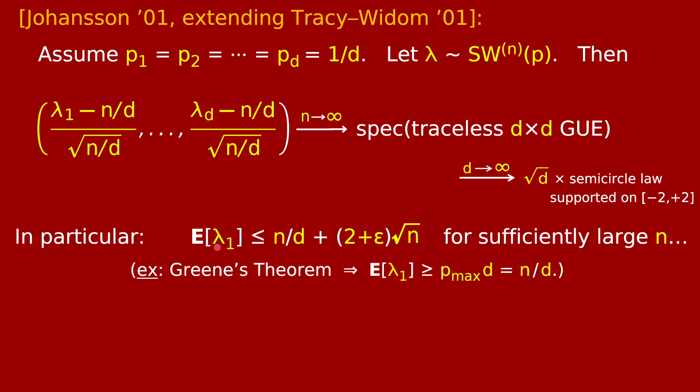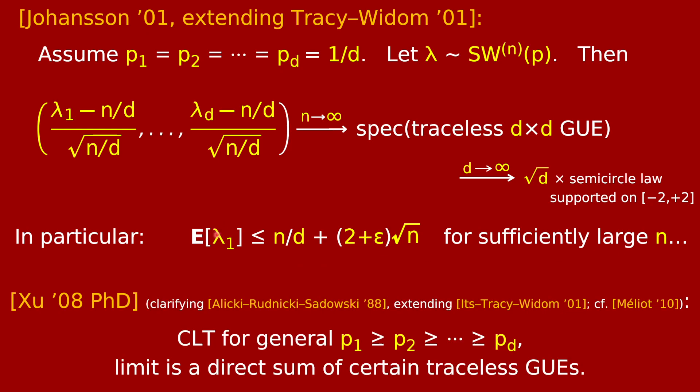Furthermore, this spectrum is pretty well understood itself. In fact, it's known that as d tends to infinity, this vector of d numbers tends to square root d times the semicircle law, the famous semicircle law supported on the interval from minus 2 to 2. As a consequence, Johansson was able to show that the expected value of the number of boxes in the first row lambda 1 is at most n over d plus something that's asymptotically 2 times root n, at least for any epsilon for sufficiently large n. In the other direction, by the way, it's not hard to show using Green's theorem that the expected value of lambda 1 is at least the largest probability p max times n, which in this case where all the p's are the same is n over d.